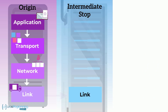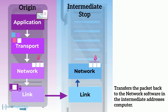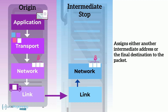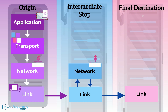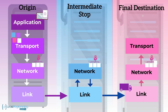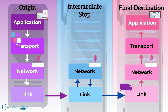If there is an intermediate address associated with a packet, the link software transfers the packet back to the network software in the intermediate address's computer. That computer's network software assigns either another intermediate address or the final destination address to the packet, then sends it to its link software, and the link software transfers the packet to the next intermediate link layer or final destination link layer software. Assuming the packet has arrived at the destination link layer, the packet is passed to that computer's network software, which moves each packet to its transport software, which reassembles all the packets that make up the message. Finally, the transport software passes the message to its application software.